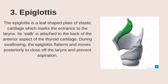Epiglottis: the epiglottis is a leaf-shaped plate of elastic cartilage which marks the entrance to the larynx. Its stalk is attached to the back of the anterior aspect of the thyroid cartilage. During swallowing, the epiglottis flattens and moves posteriorly to close off the larynx and prevent aspiration.